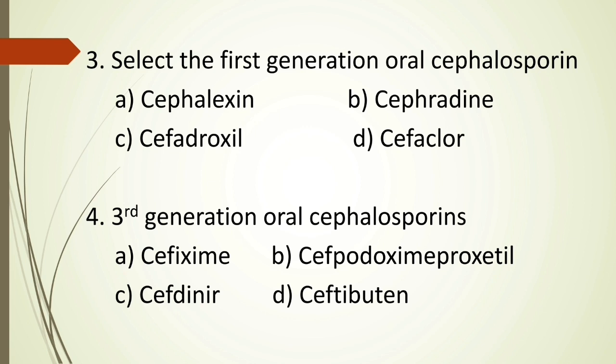Question 3: Select the first generation oral cephalosporin. Option A: Cephalexin. Option B: Cephradine. Option C: Cephadroxil. Option D: Cefaclor. Question 4: Third generation oral cephalosporin. Option A: Cefixime. Option B: Cefpodoxime proxetil. Option C: Cefdinir. Option D: Ceftibuten. Please go through these questions and give your answers in the comment box below.